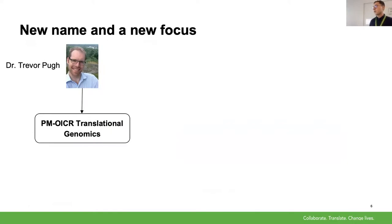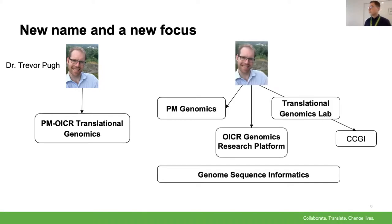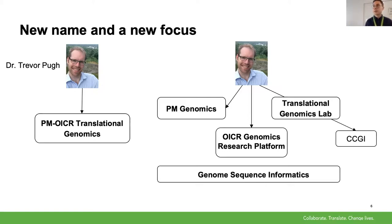My background: I started at OICR as a bioinformatician working in the Translational Genomics Laboratory under Dr. Trevor Pugh, where we did population or cohort-level studies, working with different collaborators in the community. There's a new structure at OICR — Trevor is now the Director of Genomics, overseeing Princess Margaret Genomics, the OICR Genomics Research Platform, and the Translational Genomics Lab, all encompassing genome sequence informatics.